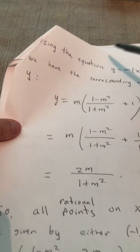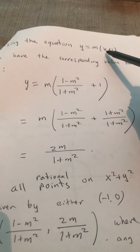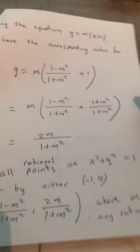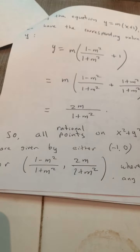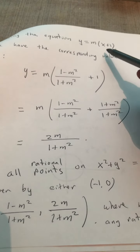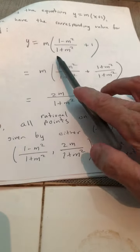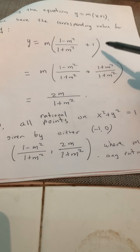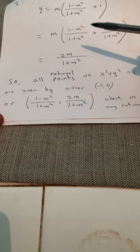So the easiest thing to do is use the equation of the line y is equal to m times x plus one. Now keep in mind, we already know what x is. x is one minus m squared over one plus m squared. So, replacing x with one minus m squared over one plus m squared, we get our equation for y, which can be simplified. Let's do a little bit of algebra. y ends up being two m all over one plus m squared.